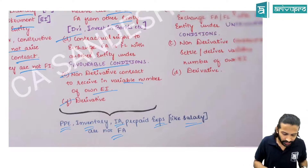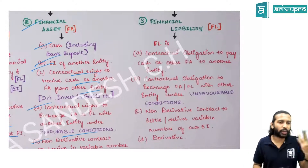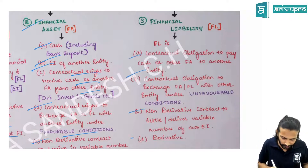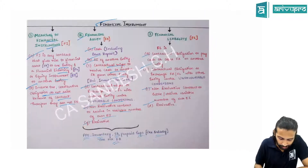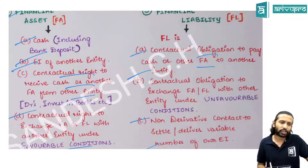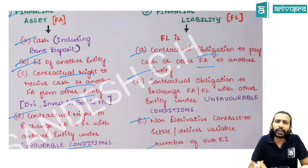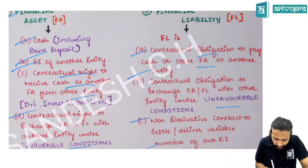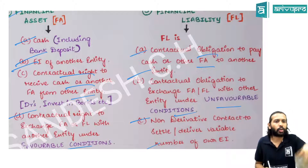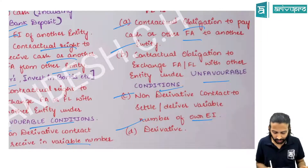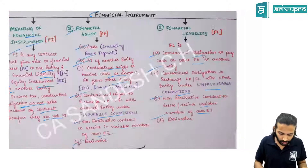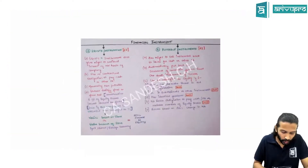A financial liability is defined using the first two features of financial asset, with the remaining four features correspondingly mirrored. Specifically, it is a contractual obligation to pay cash or any other financial asset, or to exchange financial assets or financial liabilities under unfavorable conditions, or to pay a variable number of own equity shares.